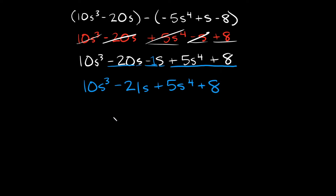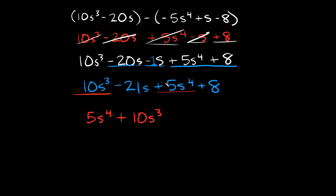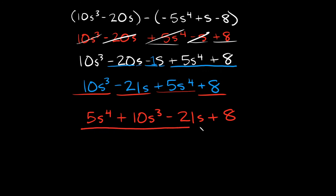Now this is almost our answer — the last thing we have to do is write this in standard form, listing terms from the biggest exponent to the smallest. The term with the biggest exponent is positive 5s to the fourth, so that goes first, then plus 10s cubed, then minus 21s, and lastly plus 8. So everything's simplified and listed in standard form — this is your answer.